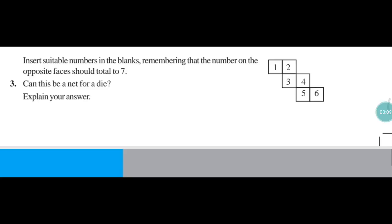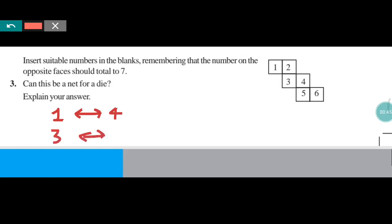Now this is question number 3: Can this be a net of a die? Explain your answer. The net is given. To determine whether it can form a die, first we will find out the opposite faces. Here, 1 is the opposite of 4, and 3 is the opposite of 6. According to this, if we fold it, then 1 will be the opposite of 4 and 3 will be the opposite of 6.